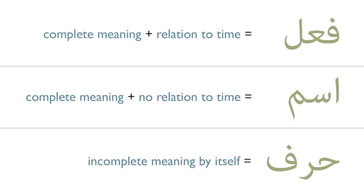Now let's take a look at the word Allah grammatically. We want to figure out what type of word Allah is. In episode one, we learned that there are three types of words: the fi'l, the ism, and the harf. And since Allah has a complete meaning with no relation to time, we know that it is an ism.